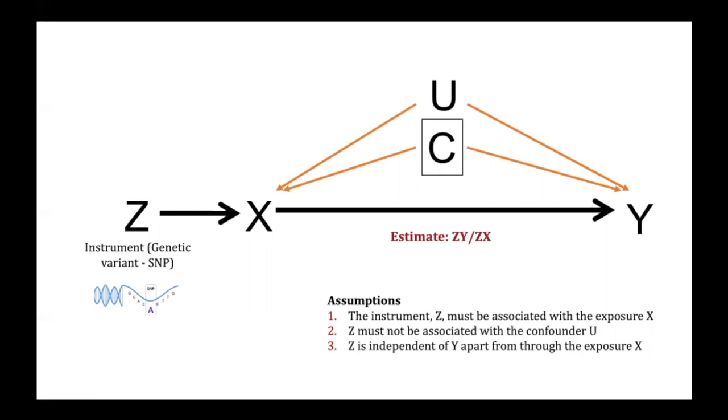Another assumption is that there should be no direct relationship between Z and Y that does not act via X, which we term directional horizontal pleiotropy, and something that we can somewhat test for.